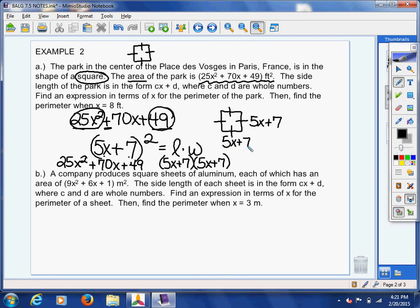So, now, they want me to find an expression in terms of x for the perimeter. Well, let's remember, what do we know about perimeter? We've got to add up all the sides. Well, what if all the sides are the same? Well, I have 4 sides that all equal 5x plus 7.